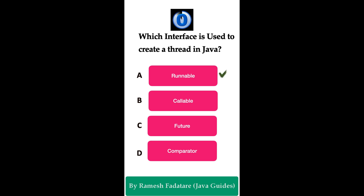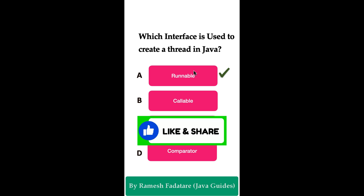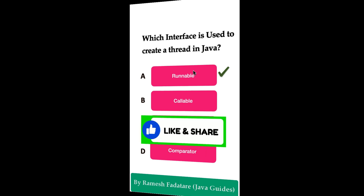The correct answer is Option A: Runnable interface. In Java, the Runnable interface is commonly used to create threads. It is a functional interface that defines a single method called the run() method, which contains the code that will be executed by the thread. To create a thread, you can implement the Runnable interface in a class, then pass an instance of that class to the Thread object. You can also use a lambda expression to implement the Runnable functional interface.